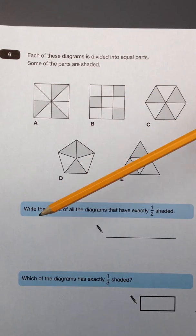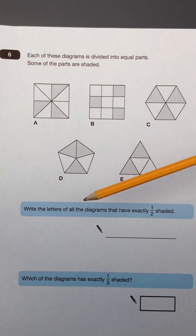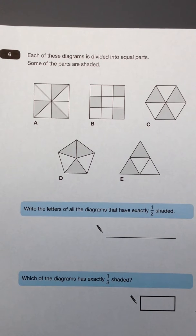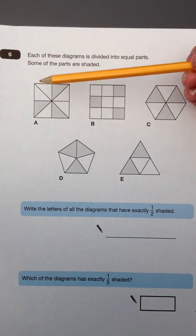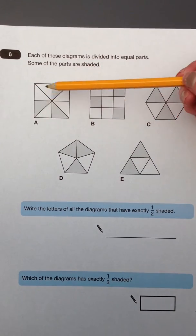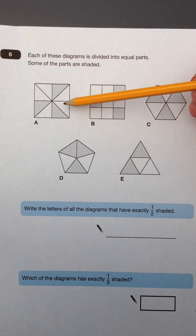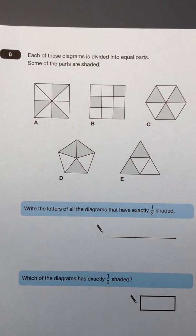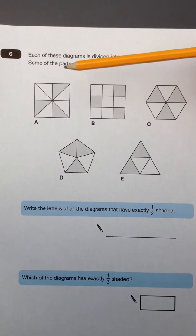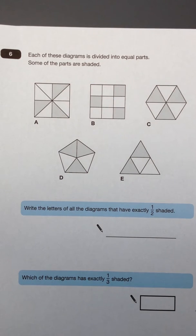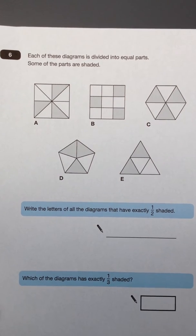The first thing that you're asked to do: write the letters of all the diagrams that have exactly half shaded. So, in diagram A, this square has been divided into 1, 2, 3, 4, 5, 6, 7, 8 pieces. Half of 8 is 4, so if exactly half was shaded, then 4 pieces would be shaded, and only 3 are. So A does not have exactly half shaded.